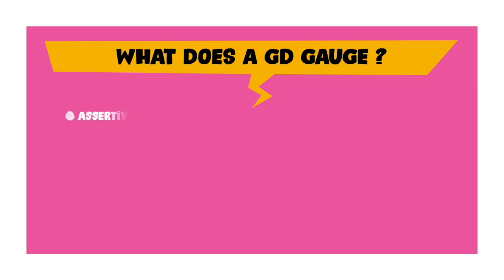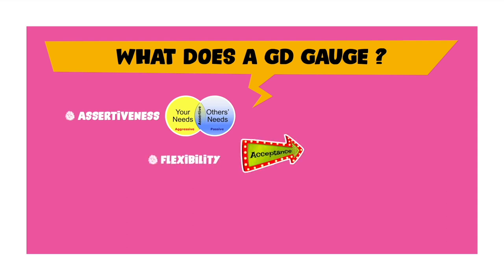Moving on, the next thing a GD gauges is your assertiveness. Being assertive does not mean you raise your voice. Your assertiveness comes from two things: if you're well read, then what you say will be well informed, and if you're well informed, confidence automatically comes from what you say — and these are the two things that make you sound assertive. The next thing is that a GD wants you to be flexible, which means if somebody makes a point completely contrary to yours and yet it makes more sense, you should be graceful enough to accept that the other's point is more valid. This is known as showing flexibility in a group discussion.